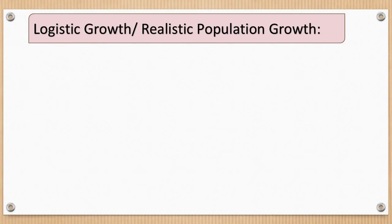Let us take a recap. The unlimited resources result in exponential population growth. Whenever there are unlimited resources and nothing is limiting, at that time exponential population growth occurs.